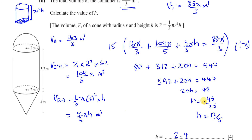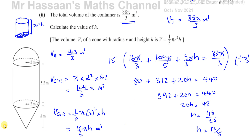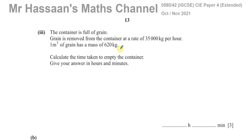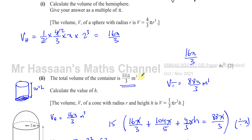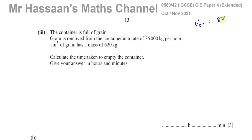Part three: the container is full of grain. Grain is removed at a rate of 350,000 kilograms per hour, and one meter cubed of grain has a mass of 620 kilograms. We need to calculate the time taken to empty the container. The total volume was 88π/3 meters cubed, so we need to think in terms of kilograms.